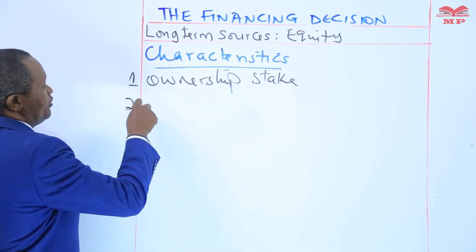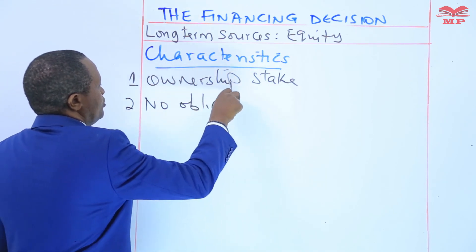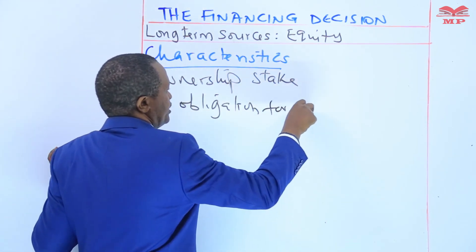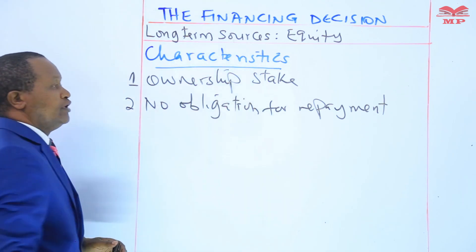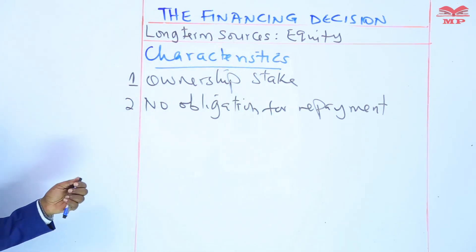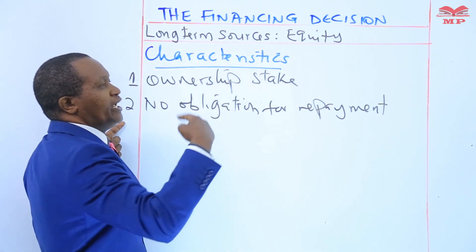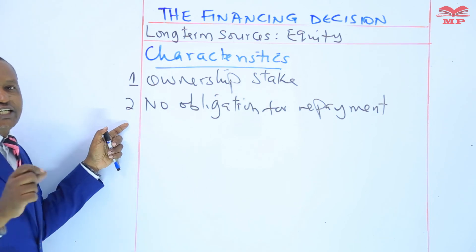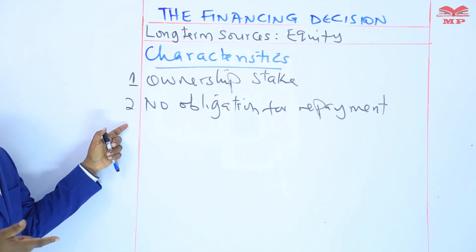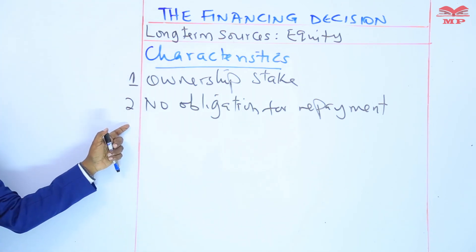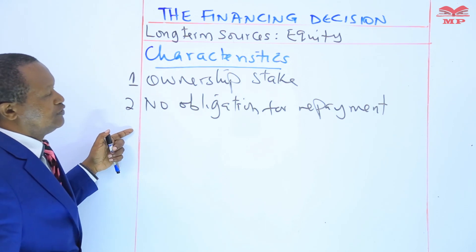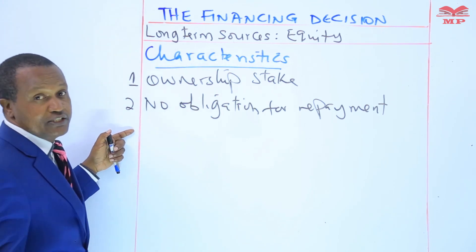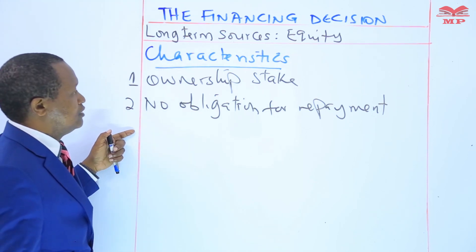The second characteristic is that equity has no obligation for repayment. Unlike debt, where there is an obligation to pay back, equity does not involve a fixed obligation for repayment of principal or interest. Shareholders only participate in company success through capital appreciation and dividends.